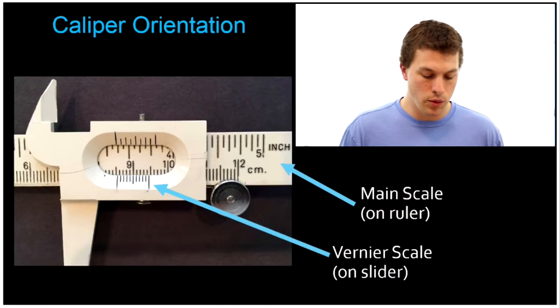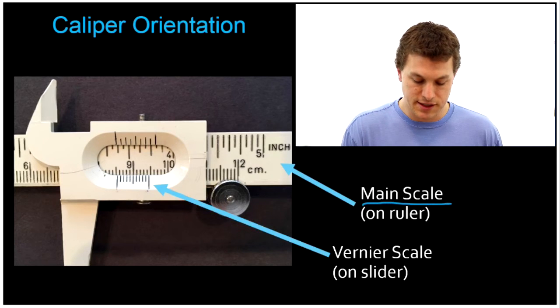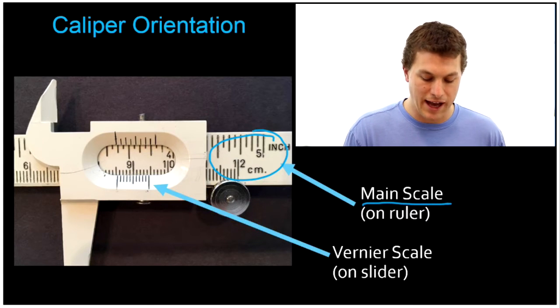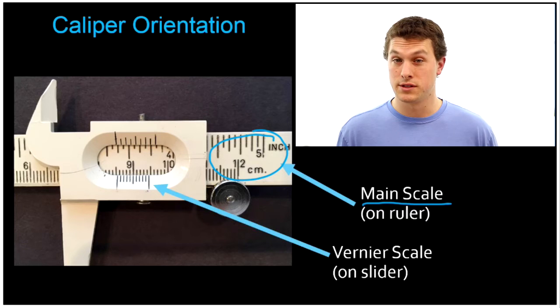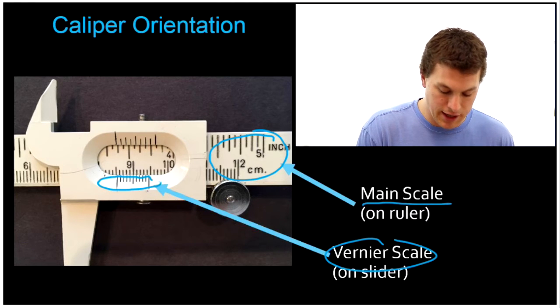First, let's orient you on some vocabulary I'm going to be using. One is the main scale. That refers to the scale on the actual ruler, the thing that sort of holds still. Then there's the vernier scale, and that's just these ticks right here.